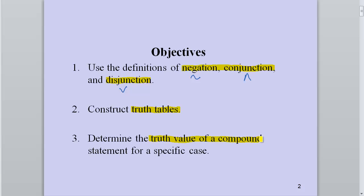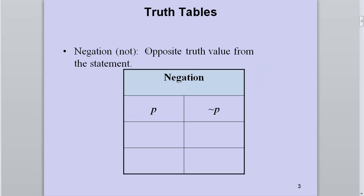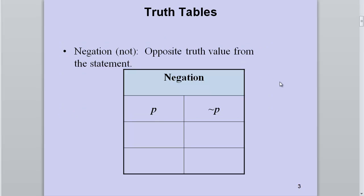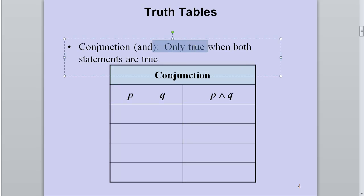Negation is the opposite truth value from the statement. We have a statement p, which could be either true or false. Not p is then the opposite truth value: if p is true, then not p is false, and if p is false, then not p is true.